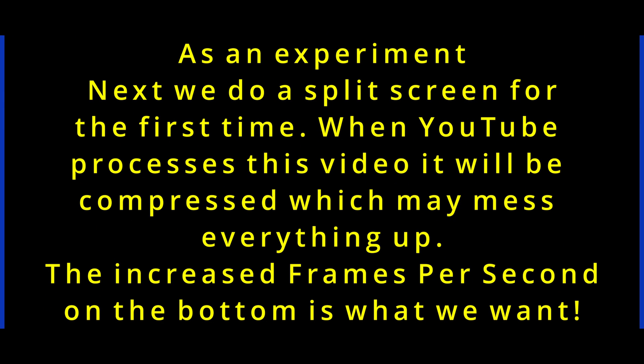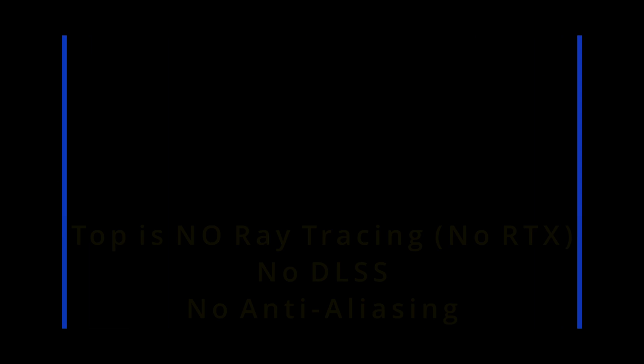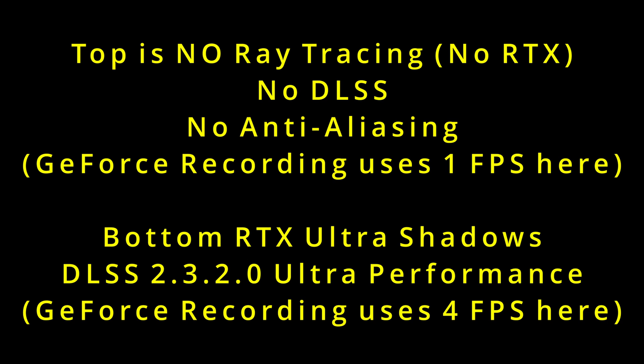As an experiment, we're going to do a split screen for the first time. What we want is an increased frames per second on the bottom result. We used the 3060 12GB overclocked core at 171 and underclocked memory at minus 502. We used an Intel i7-7700 four-core eight-thread, 7th gen. On the top there is no ray tracing, no DLSS, and no anti-aliasing. On the bottom: RTX Ultra Shadow, so maxed ultra performance.